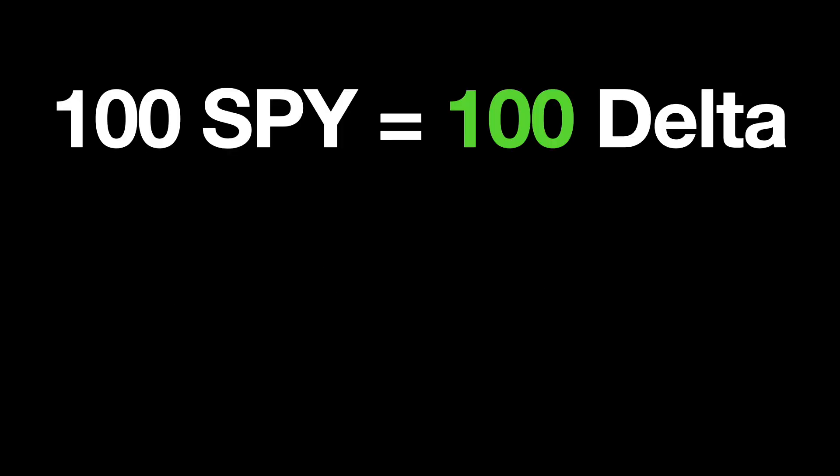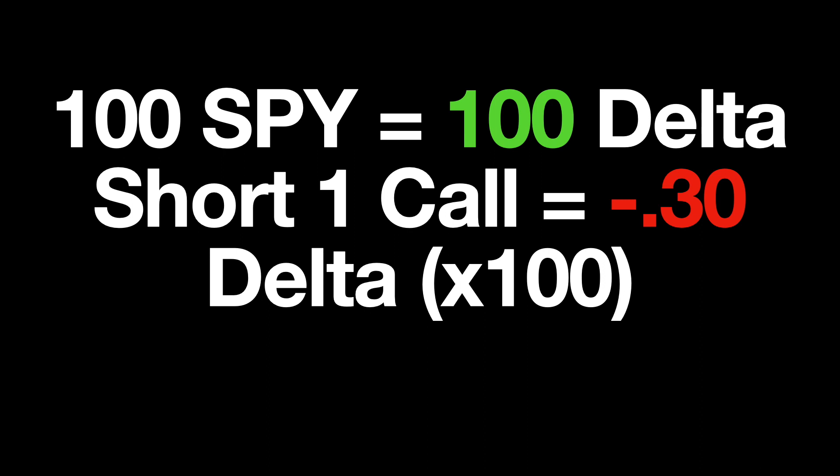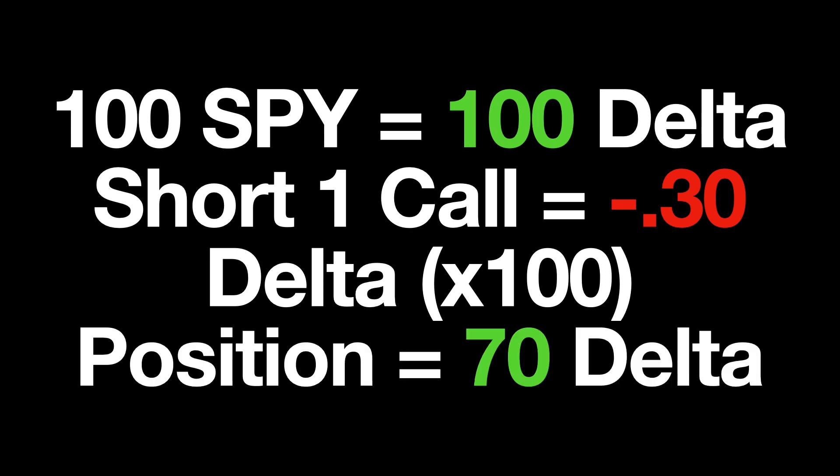But what if you have a covered call position? In that situation, you might have 100 shares of SPY with a Delta of 100, and then you might also have a short call with a specific Delta of its own. Because a short call is a short position — meaning it benefits from the stock going down — it's going to have a negative Delta. So that negative Delta from the covered call will offset the positive Delta of the stock, and you'll have some net Delta value. If you have multiple positions inside a trading account, you can know not only the Delta of each position, but also the Delta of your entire portfolio.